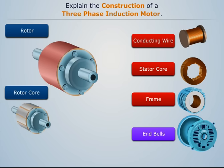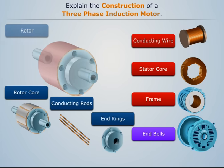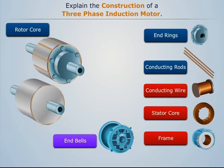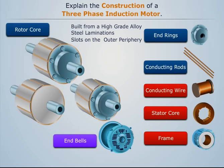The rotor is the rotating part of a motor and it consists of a core, conducting rods, and two end rings. The rotor core is a cylindrical core built from high-grade alloy steel laminations with parallel slots on the outer periphery. If the slots are not parallel to the shaft of the core, the rotor is called a squirrel cage rotor. If the slots are parallel to the shaft, the rotor is called a phase wound or slip ring rotor.